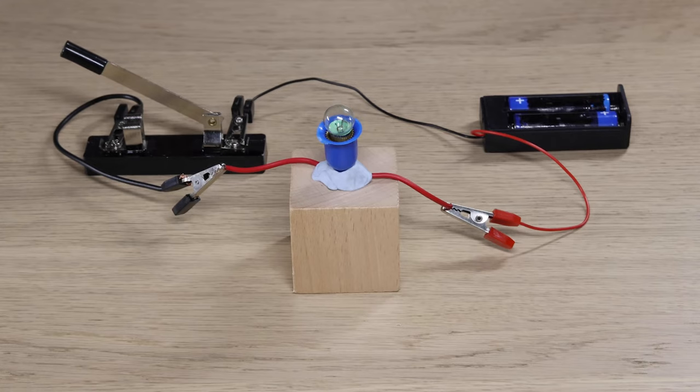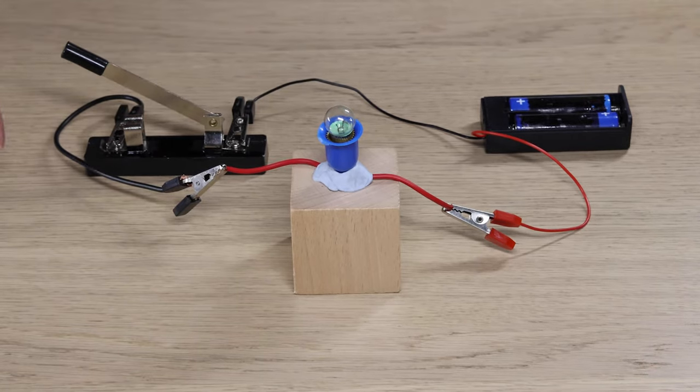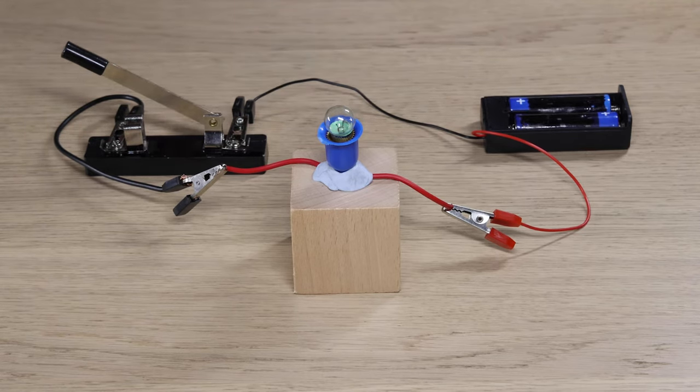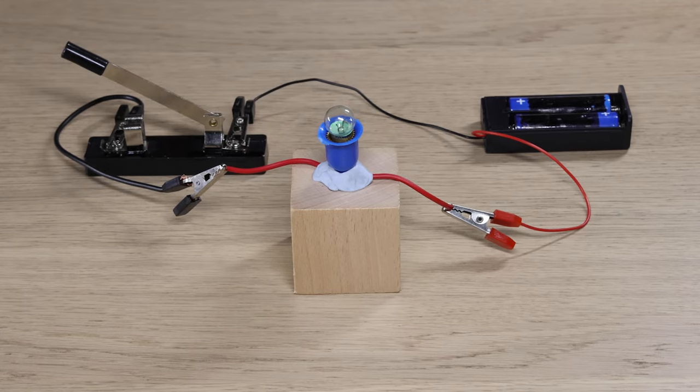This circuit consists of a light bulb, a switch, and two batteries in series. Observe that the switch is open and there is no path for the electric current to flow.